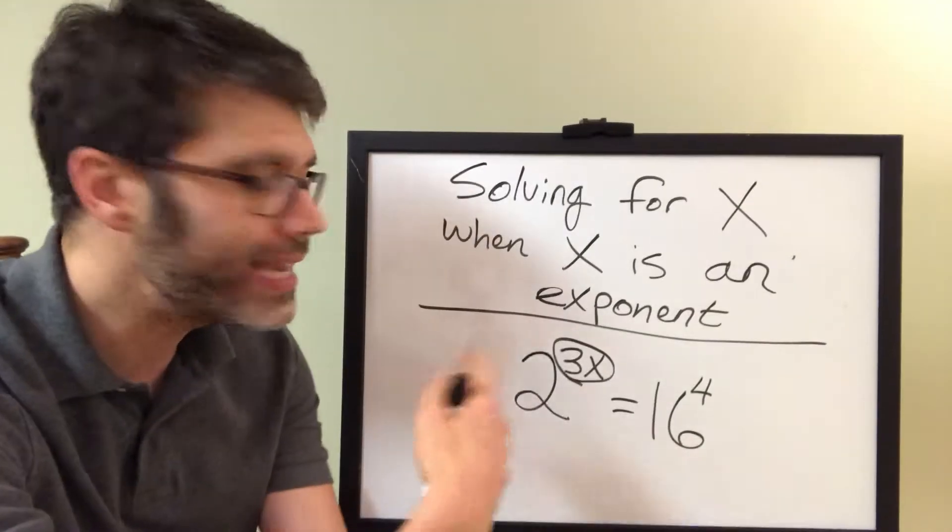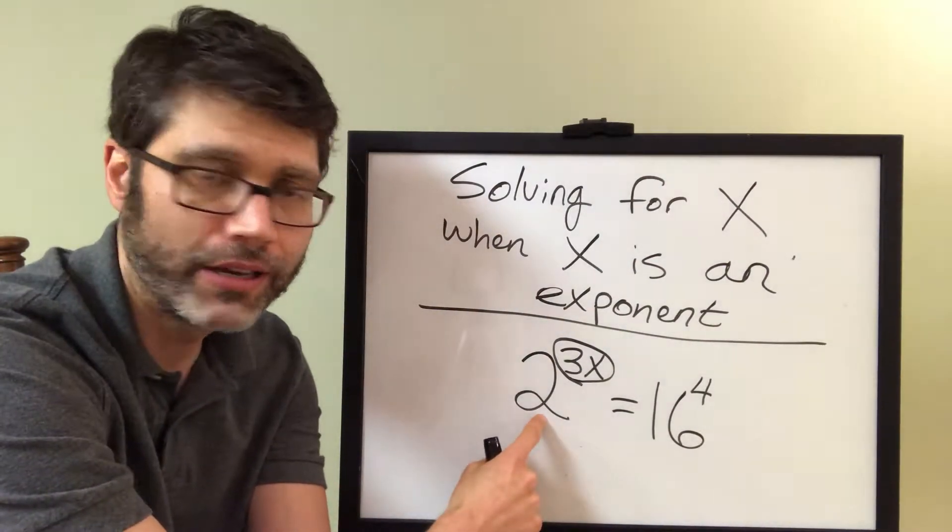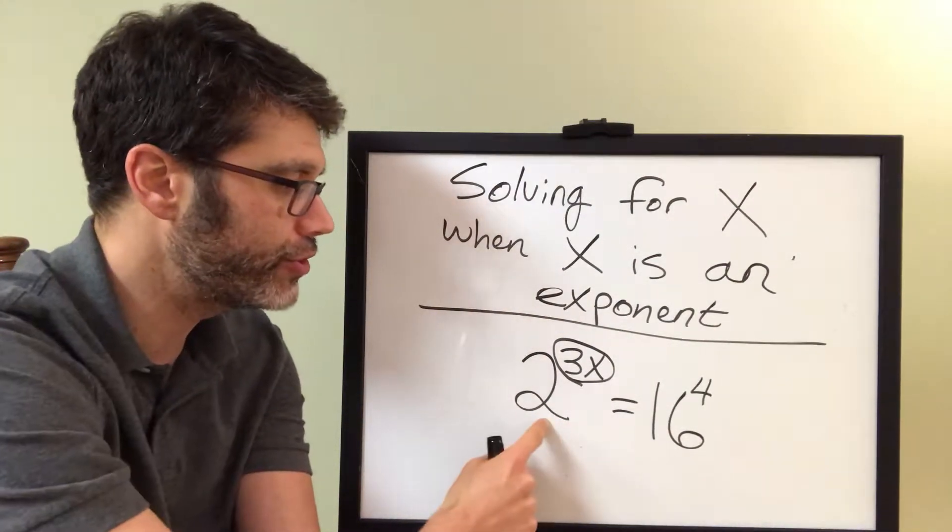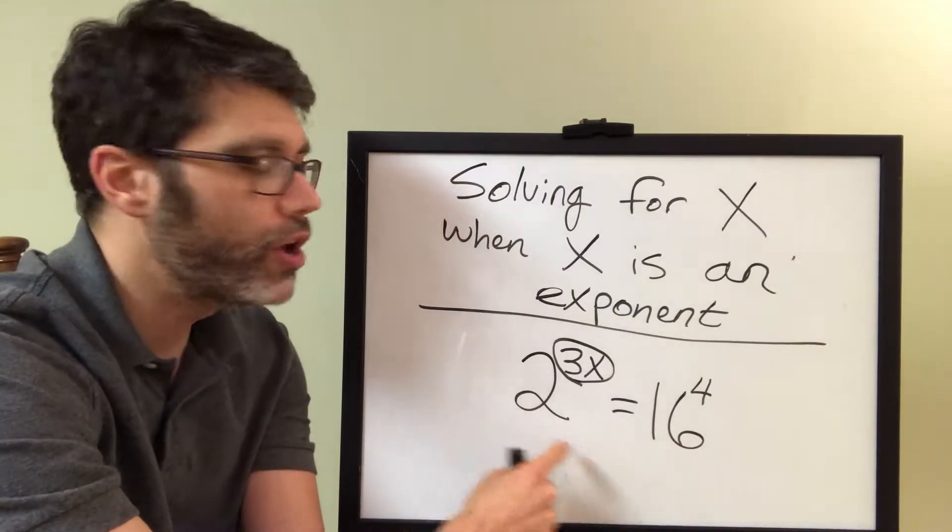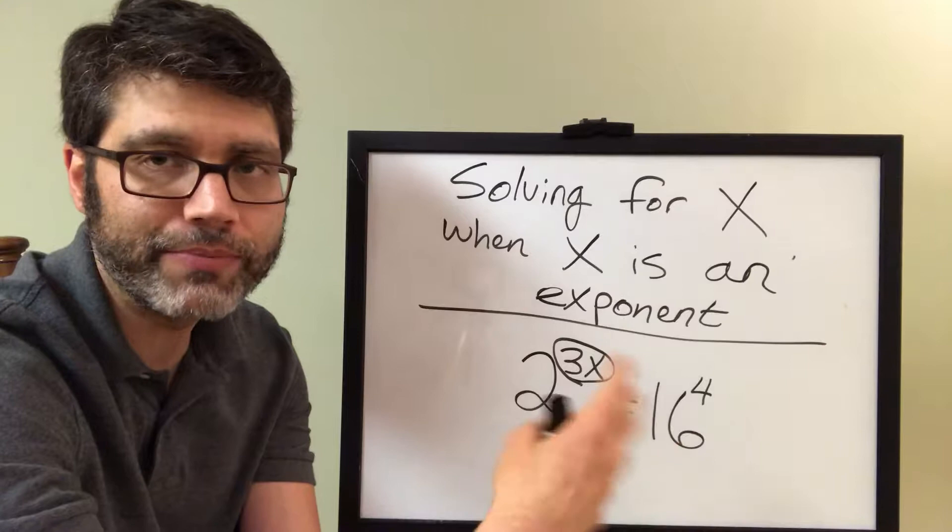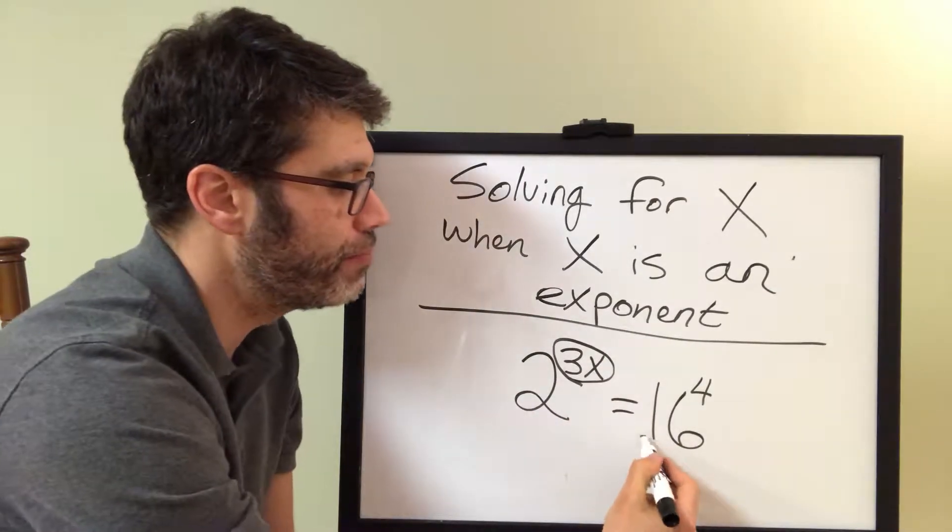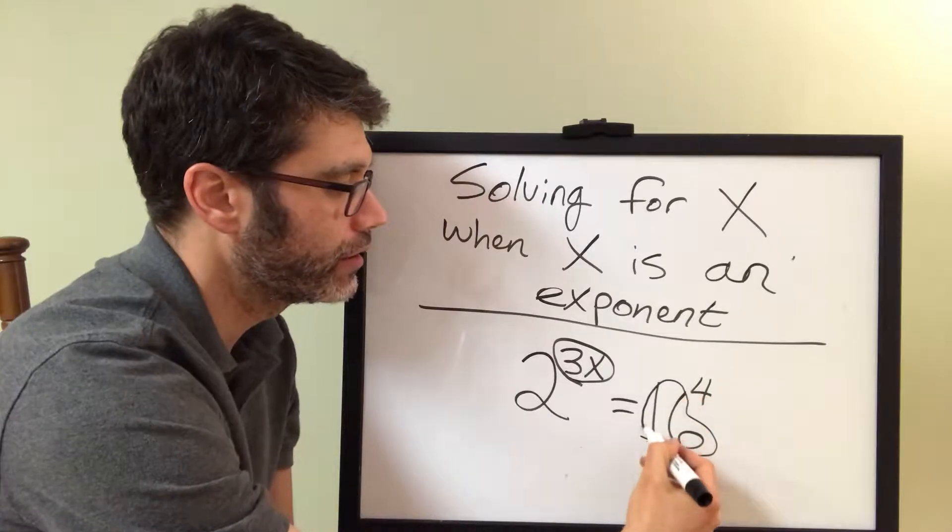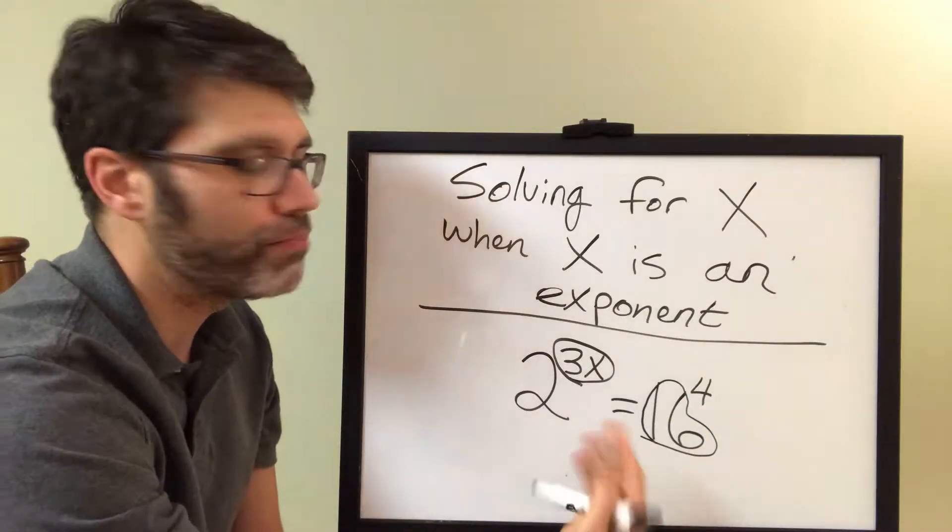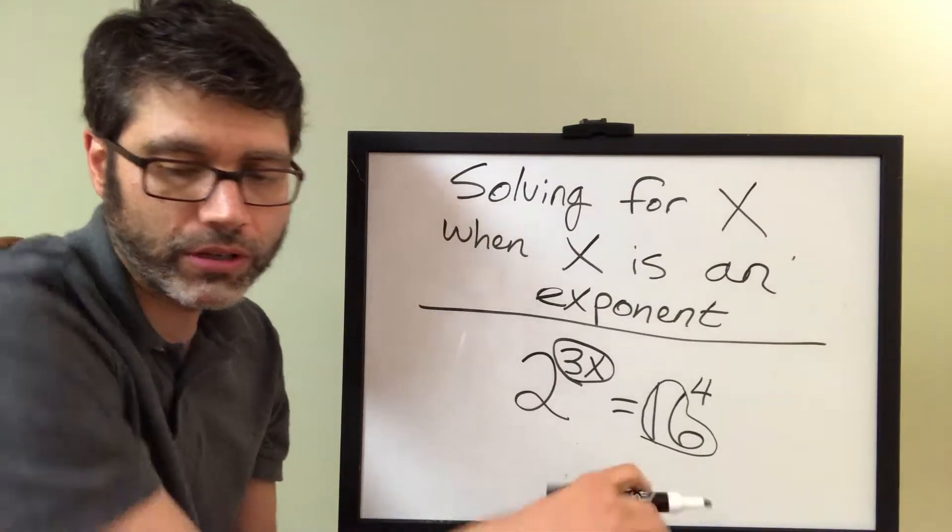The easiest way to do that usually is to look at the smallest base. So here is 16, here is 2. What's smaller? 2. Convert 16 into some form of a base that has a 2. So try to take the bigger number that you see, in this case 16, and put it in terms of a base of 2.